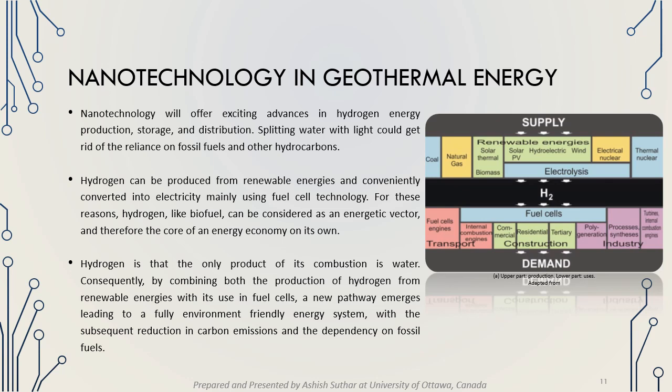Now let's talk about energy generation from hydrogen. Nanotechnology offers different advances in hydrogen energy production, storage, and distribution. Splitting water with light could eliminate reliance on fossil fuels. Hydrogen can be produced from renewable energies and converted into electricity mainly using fuel cell technology. Since the only product of hydrogen combustion is water, combining hydrogen production from renewable energies with its use in fuel cells leads to a fully environmentally friendly energy system with reduced carbon emissions and less dependency on fossil fuels.